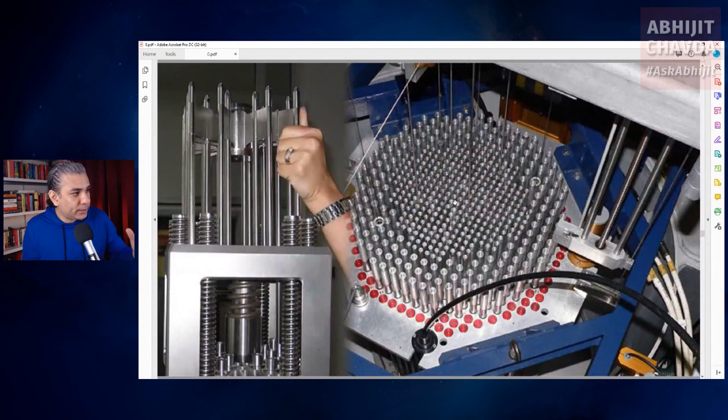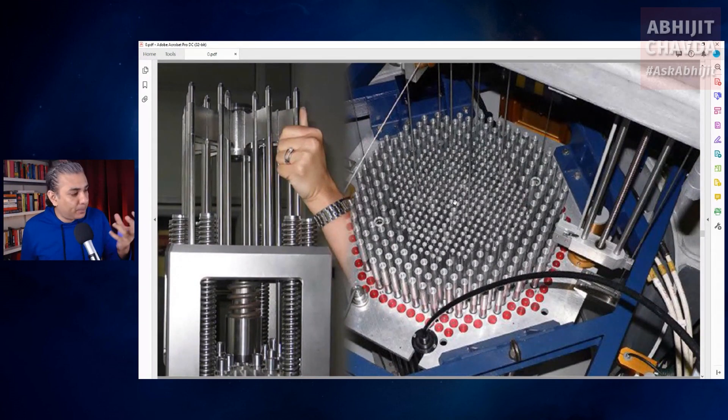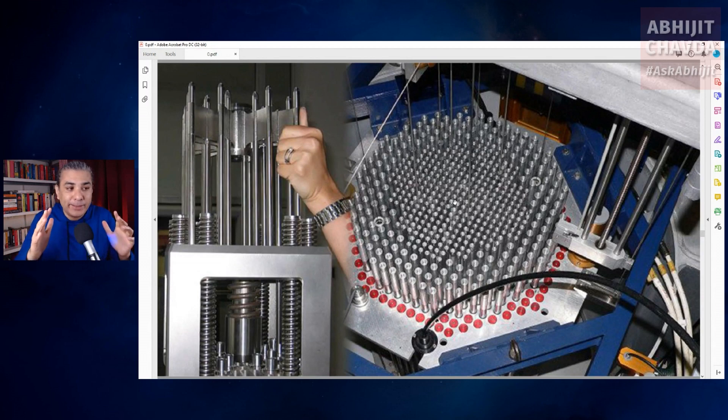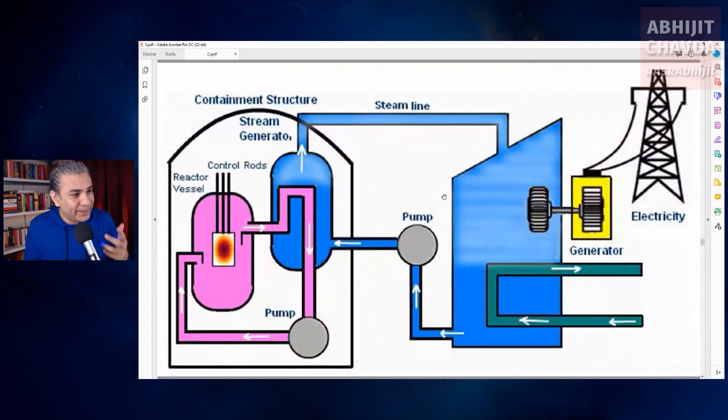The heat is controlled by inserting cadmium rods into the reactor. These cadmium rods absorb neutrons and thereby slow down the nuclear fission reaction. This uranium fuel acts as an extremely high energy heat source. It heats the water and turns this water into steam. This steam drives a turbine which spins a generator to produce power.